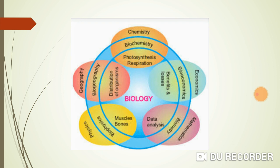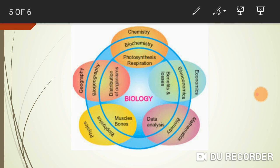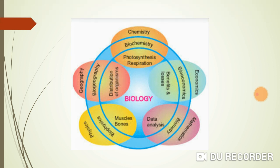Biogeography is the relationship between geography and biology. It particularly covers which organisms are distributed where and how — for example, why kangaroos are only in Australia, and in which parts of the world elephants exist and what their geographical distribution is.